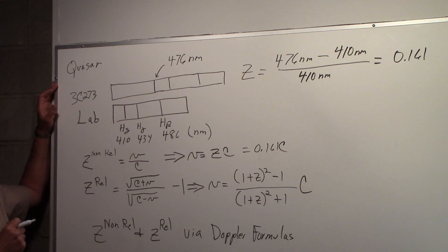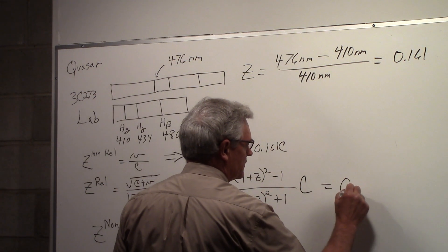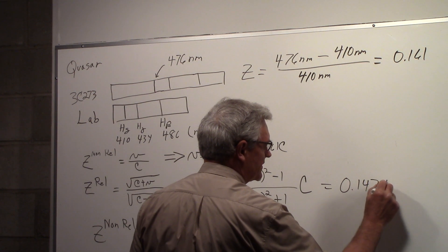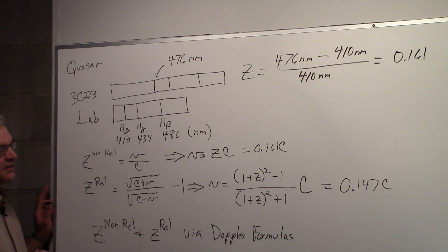If you do the calculation using the relativistic formula, you would find this to be 0.147c. But those are not correct. It's roughly correct but not correct. And it gets worse as the z value increases. This is a very small z value, 0.161.